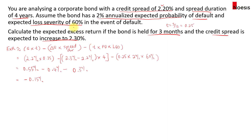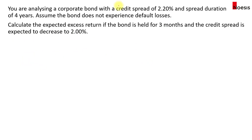This tells us that the risk we are facing from holding this bond will outweigh the benefits. Now let's look at another example. For the same corporate bond, we assume this time that the bond does not experience default losses. We still hold the bond for 3 months and the credit spread is now expected to decrease to 2%.